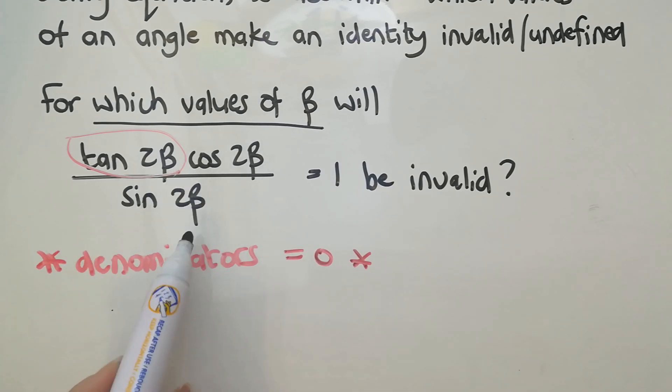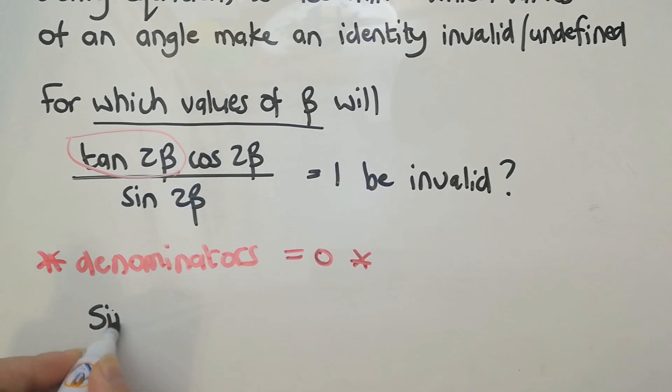So that means that I need to say, well, if this denominator is 0, this whole thing's invalid. So now I'm setting up an equation and I'm saying, well, if sin of 2β was equal to 0, then I would have something invalid.